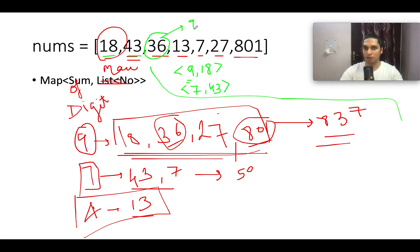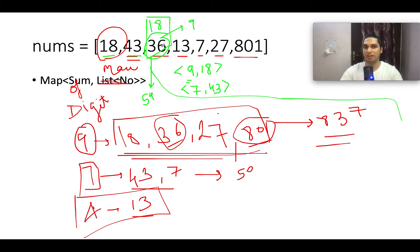36 sums to 9. We check the map — there's an entry: 18. We sum 18 + 36 = 54, so one candidate answer is 54. We then compare 18 and 36; 36 is larger, so we replace the map entry for key 9 with 36. Next is 13, digit sum 4 — new entry: key 4, value 13.